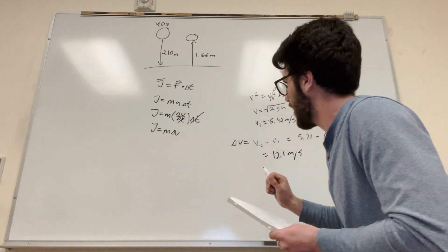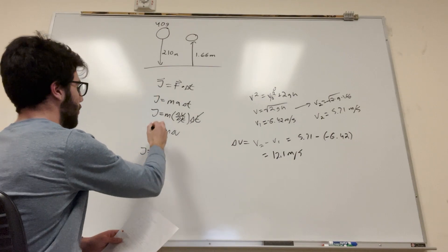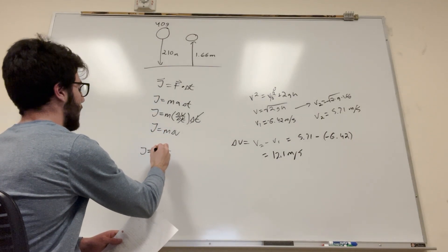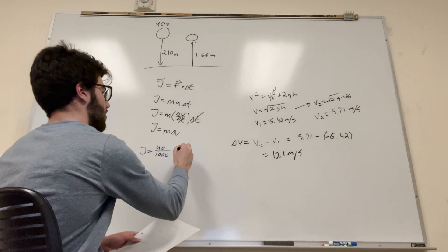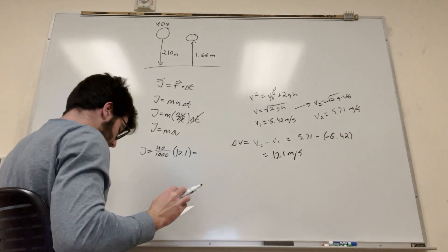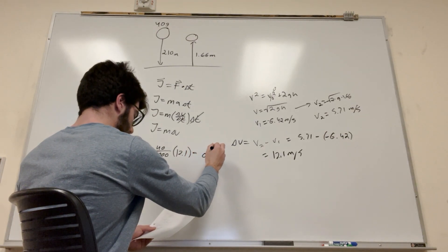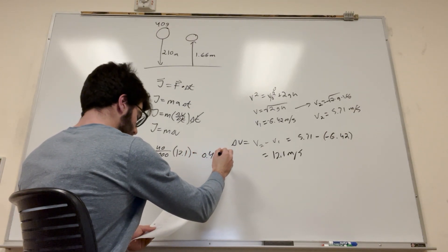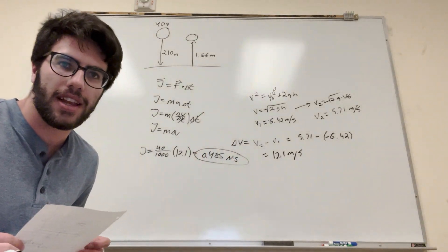Okay, finally, we can go back over to here. So our impulse is equal to the mass, which is 40 grams divided by 1,000 to get kilograms, and you're going to multiply it by 12.1. And then this, when you do this, will give you 0.485 newtons per second. That's our impulse right there. So that's part A of this.